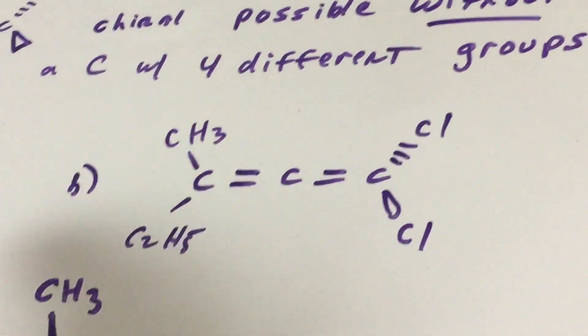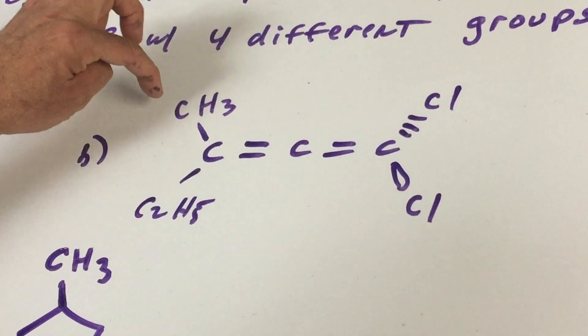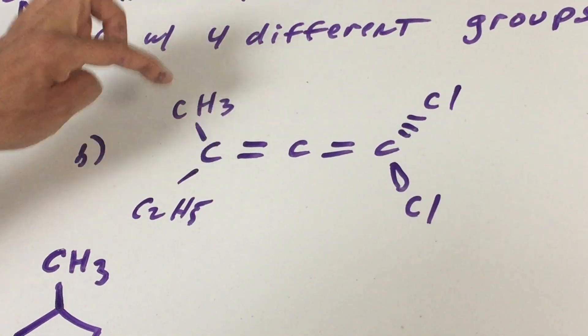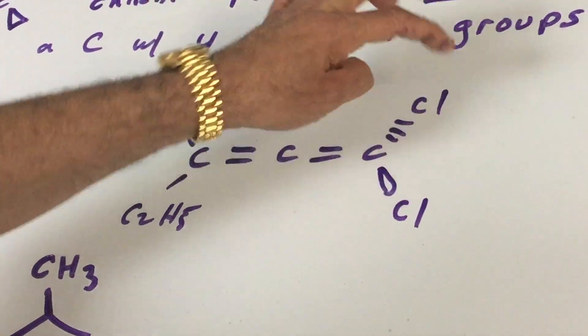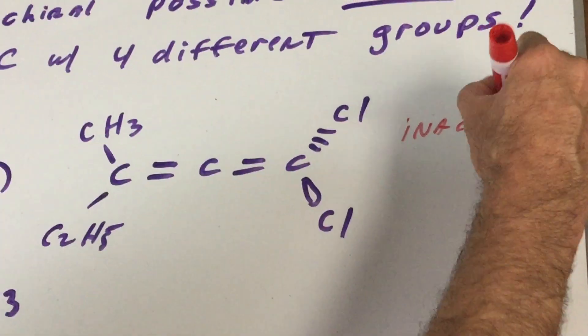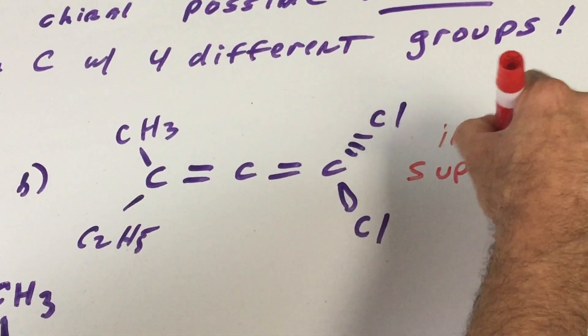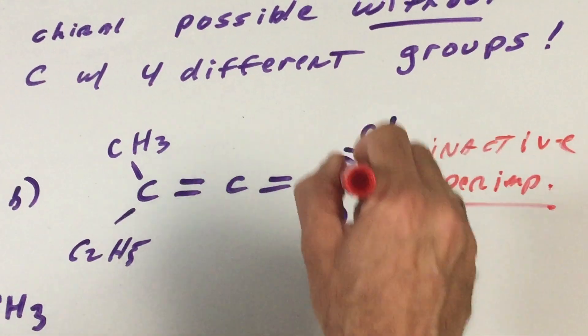Now let's try this one. Do you think this one would be optically active? Well you look over here. You say this and this are different. Good. But this and this are not different. So this is optically inactive. Because if you made a model of this they would be superimposable on each other.